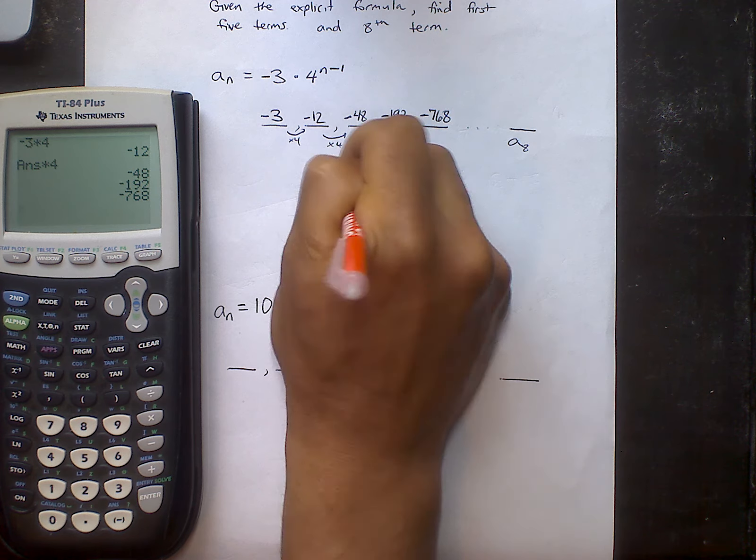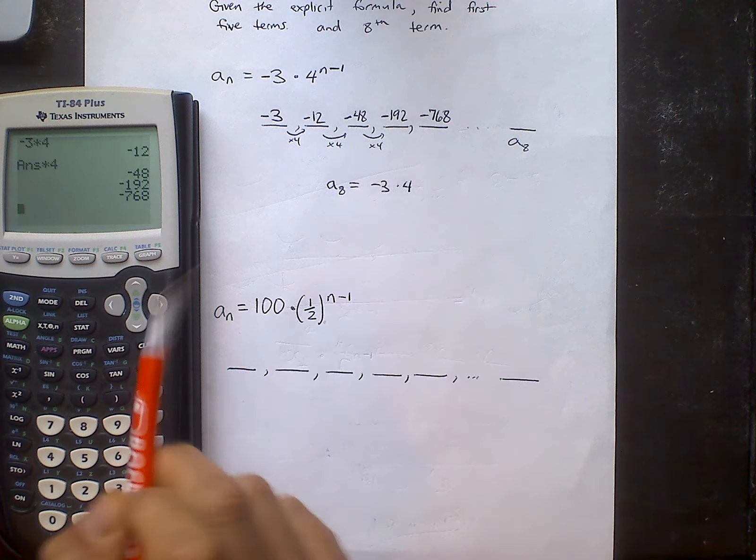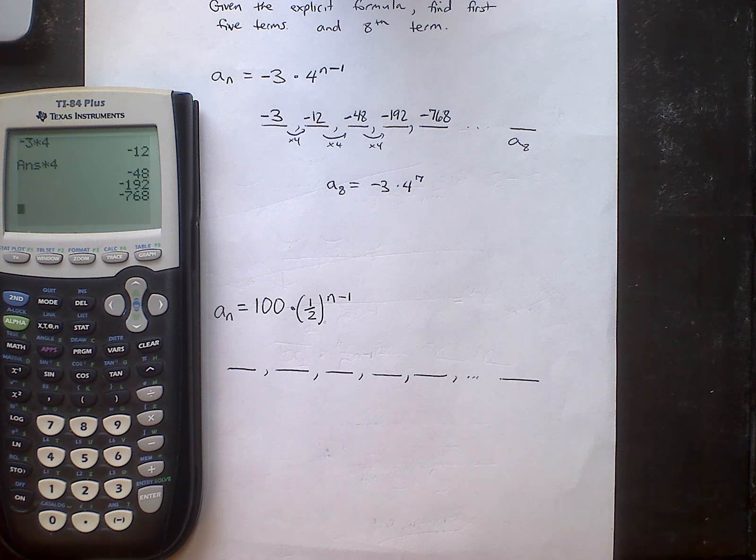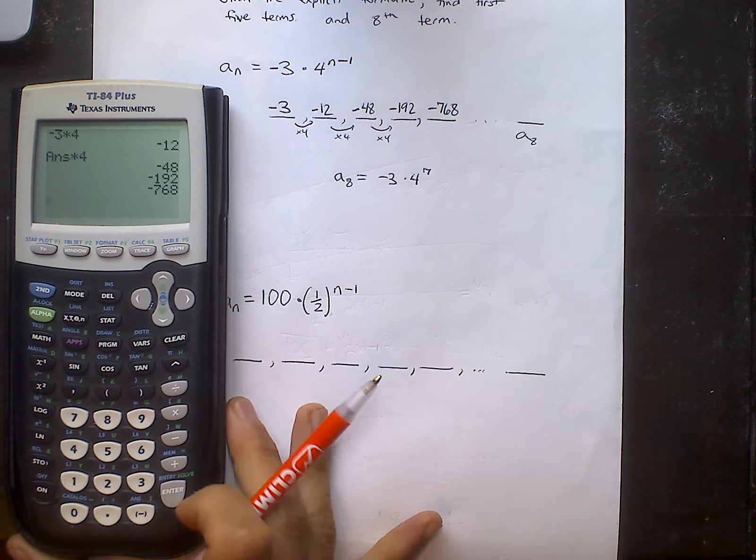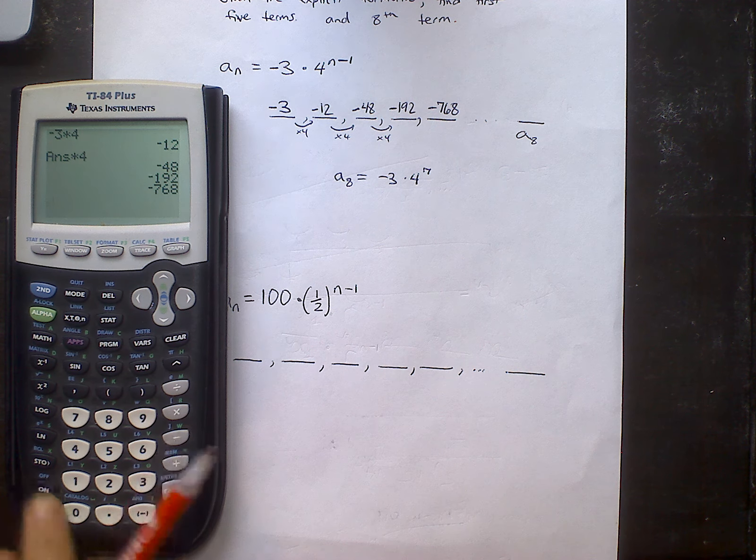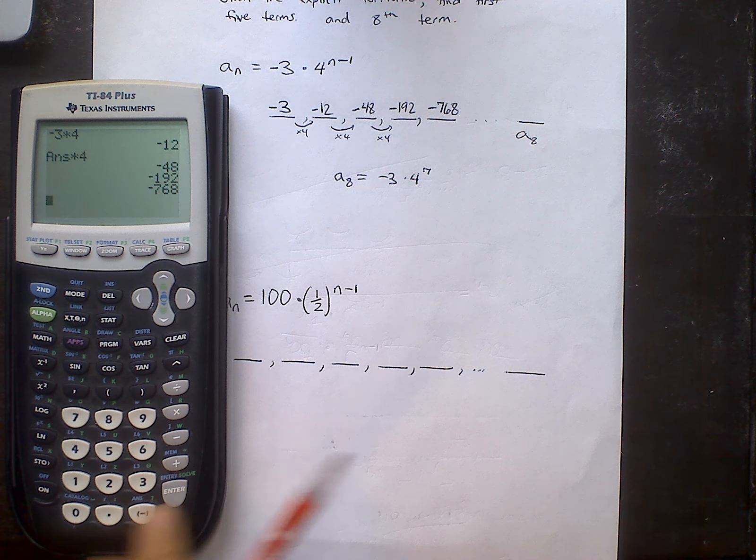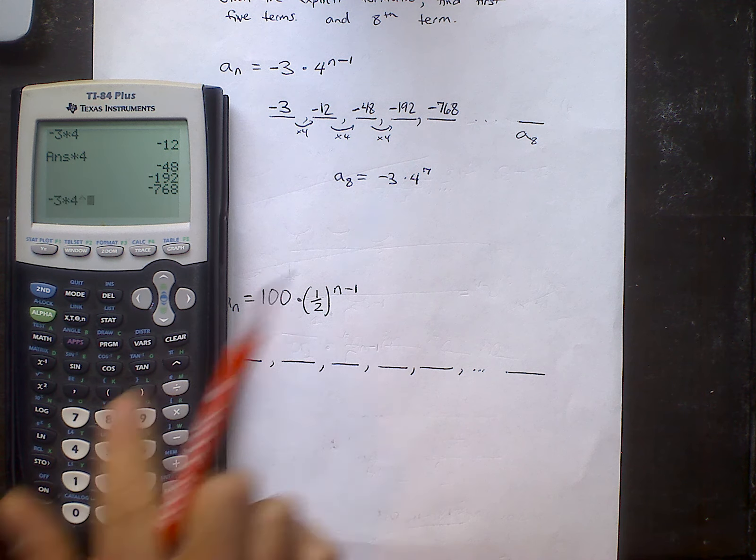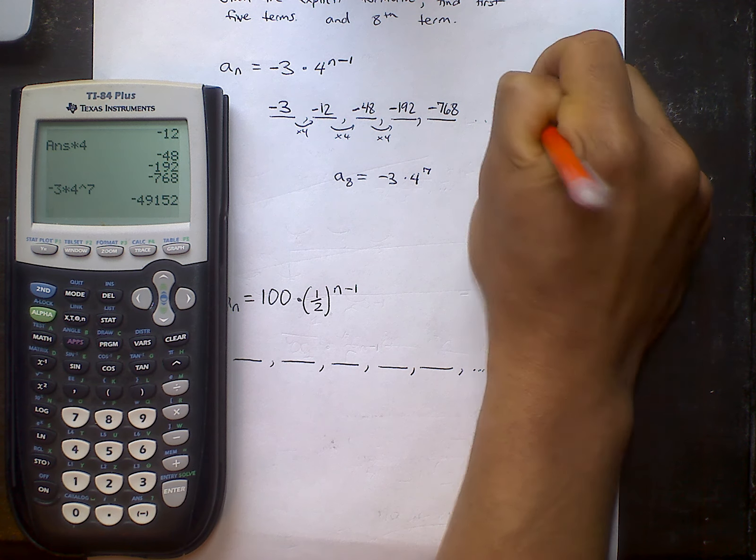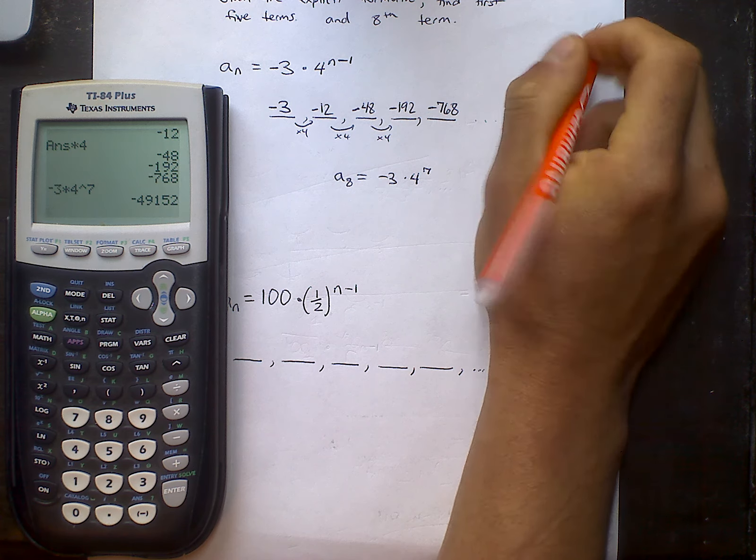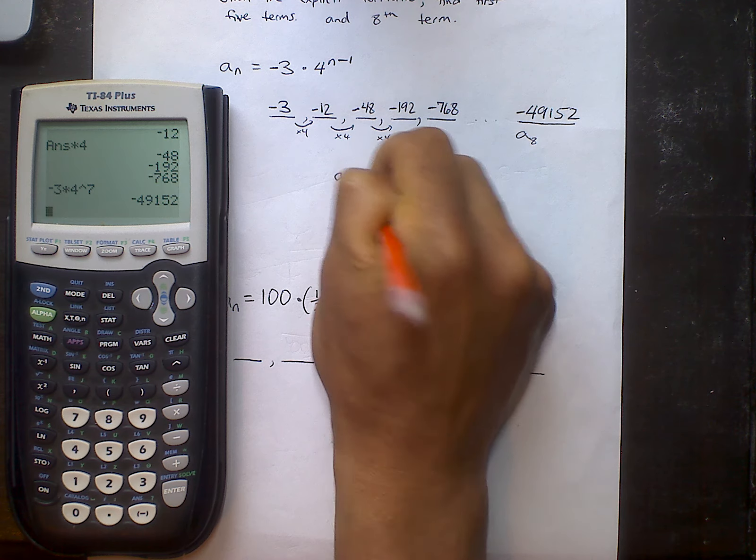So finding a8 is really negative 3 times 4. But how many times am I multiplying by 4? Only 7 times. One less, which is n minus 1. I can do it in one step in the calculator. This is very helpful if I'm trying to get to some term besides the 8th term, like something really far down the road. Negative 3 times 4 raised to the 7th. Very large negative number. Negative 49,152 would be the 8th term on this list.